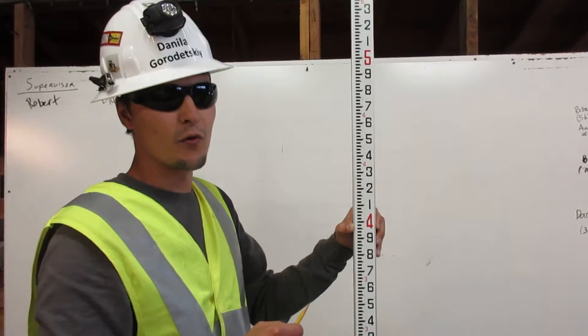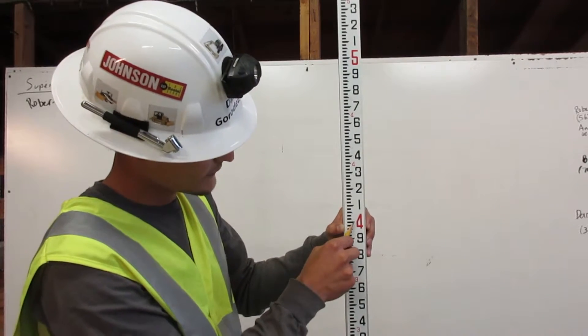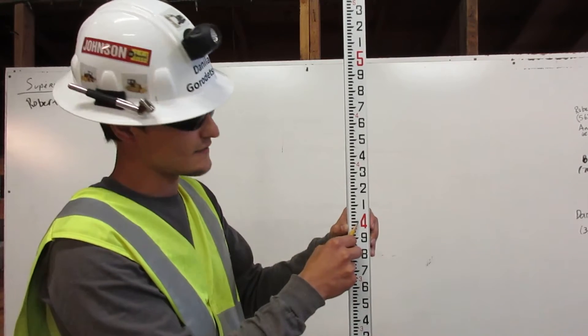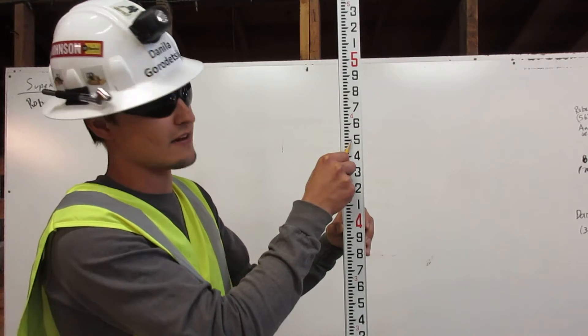To find 4.57 feet on the engineer rules first go to the four feet. Four feet. Next go up to five then represent 50. 50 is over here. Then count up seven.